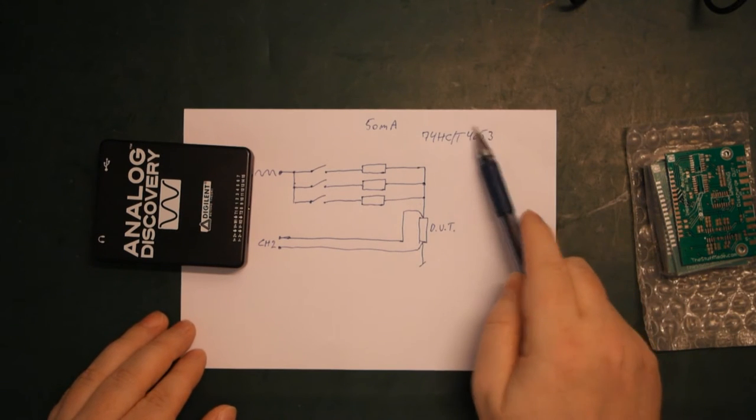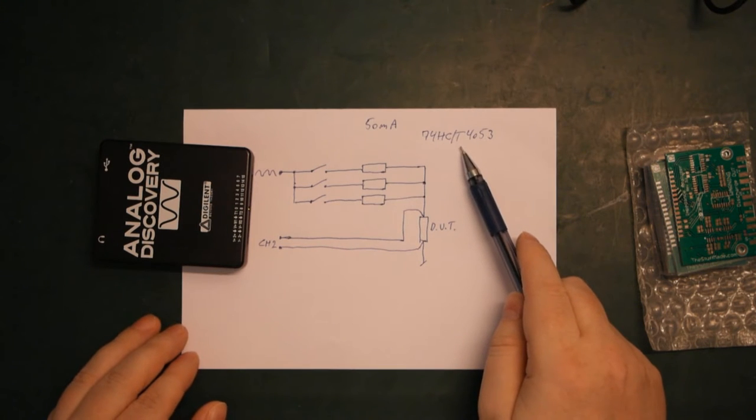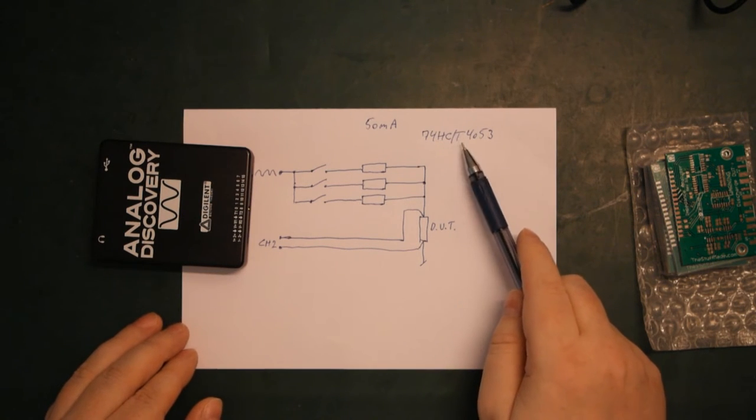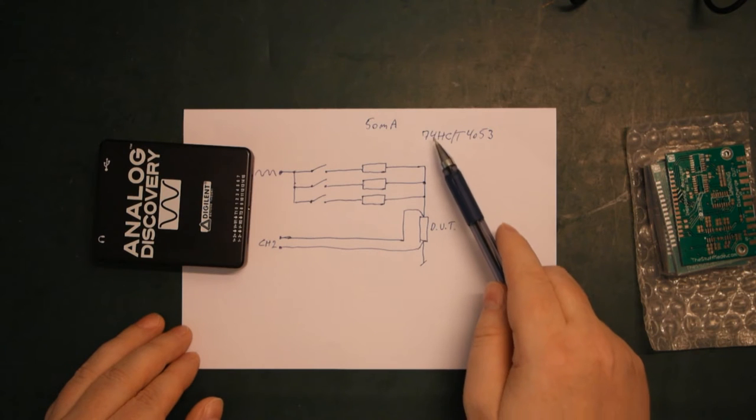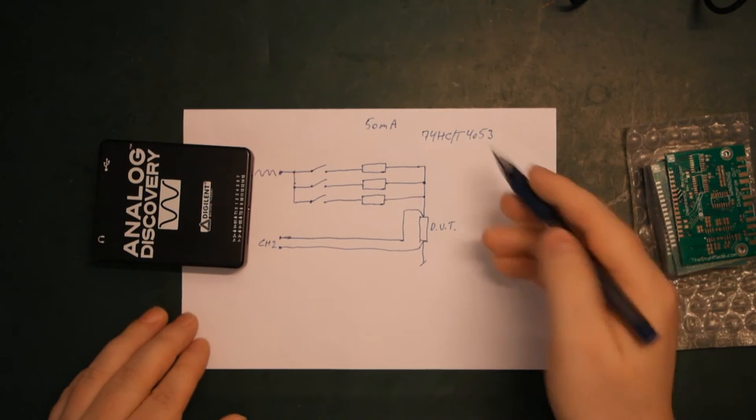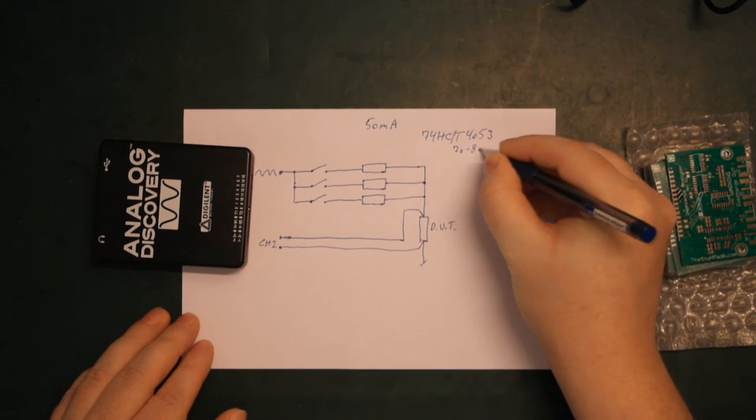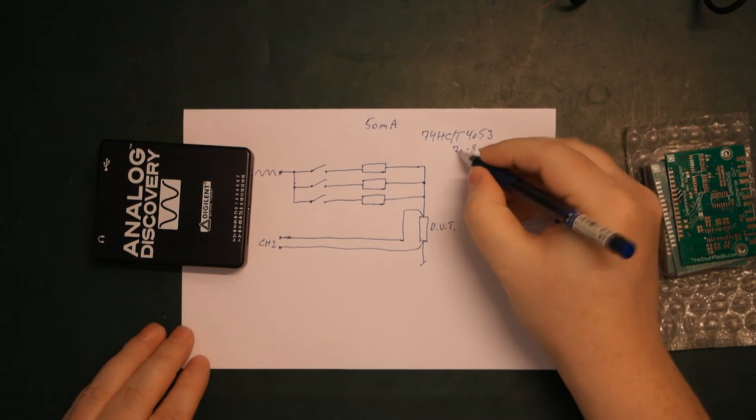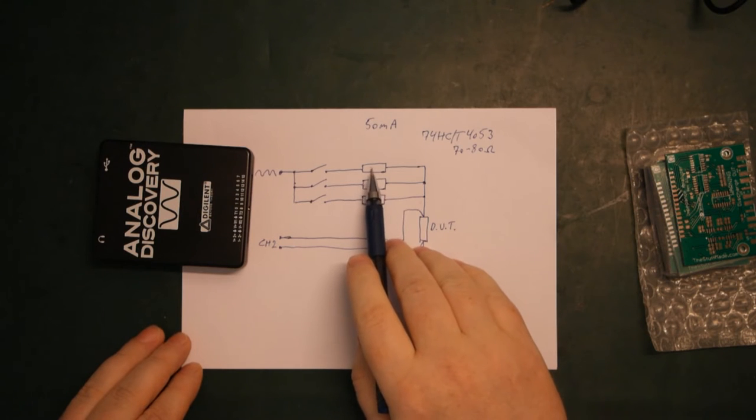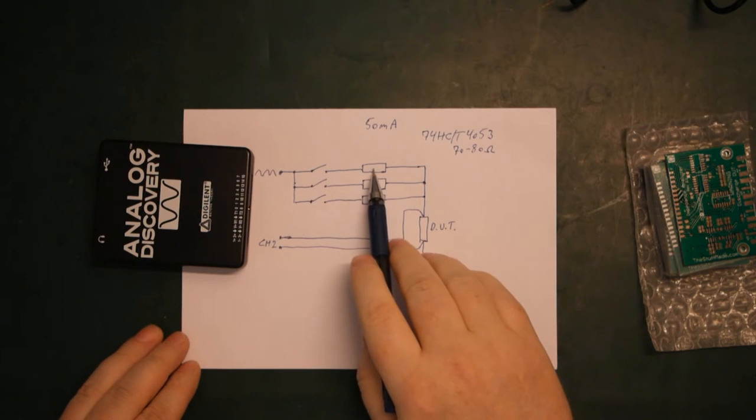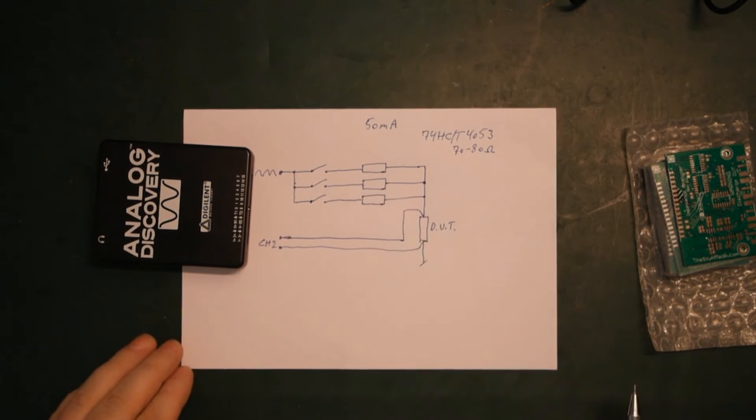But we have to think about that there are some limitations. So while these are quite linear, the internal resistance is relatively high. The internal resistance is something around 70 to 80 ohm. So that is much too high for the lowest shunt range, because here we're talking the shunt will be less than 50 ohm.